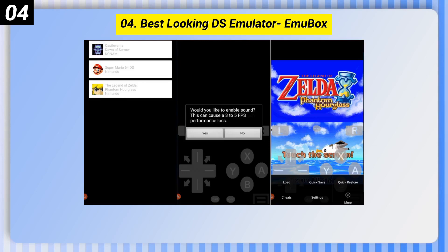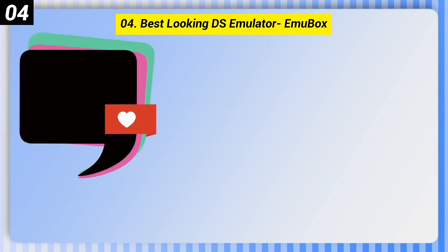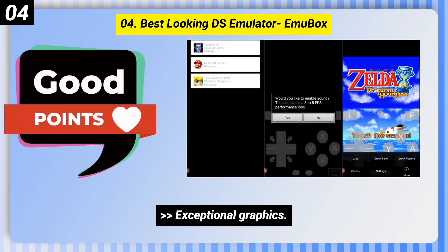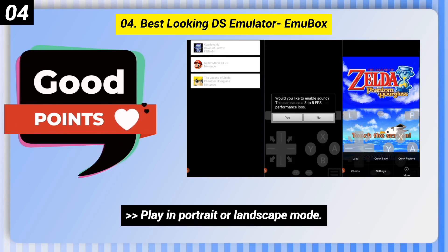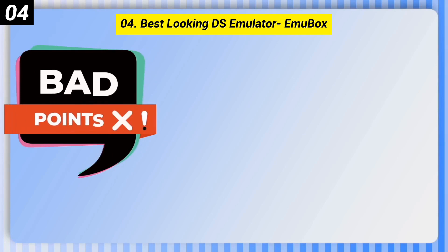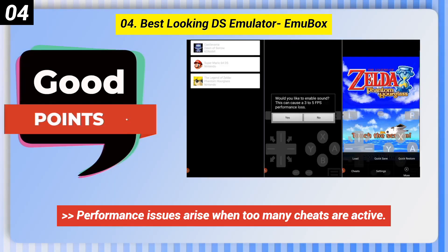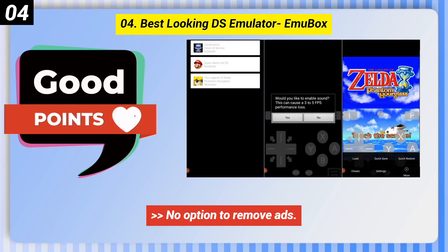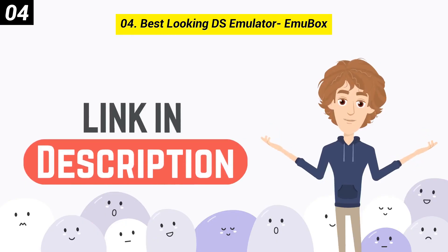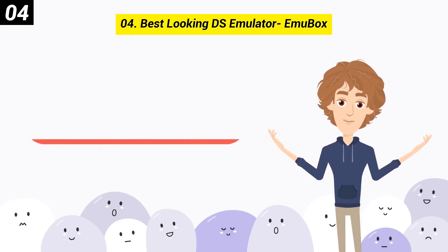Number 4: Best Looking DS Emulator — EmuBox. Some good points: exceptional graphics and the ability to play in portrait or landscape mode. Some bad points: performance issues arise when too many cheats are active, and there is no option to remove ads. You can check out the link in the description box.